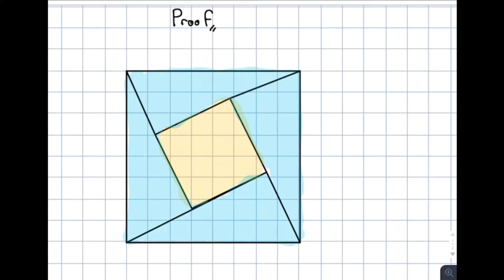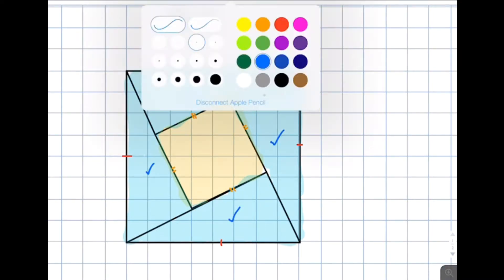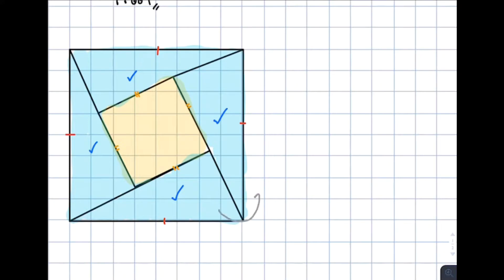First, you need to draw four congruent right triangles and then rearrange them to make a square. Each side of the square is the opposite side of a right triangle, so name each side c.